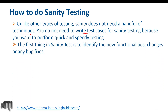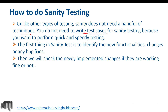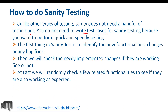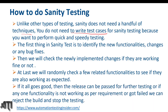The first thing in sanity testing is to identify new functionalities, changes, or any bug fixes and check whether they are working fine at a very initial level — we won't go to a deep level. Then we check the newly implemented changes and finally randomly check a few related functionalities to see if they are also working as expected. If all is good, the release can be passed for further testing. If any functionality is not working as per requirements, we can reject the build and stop the testing.